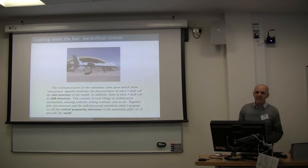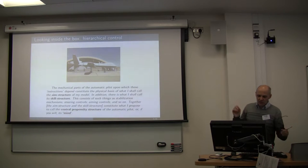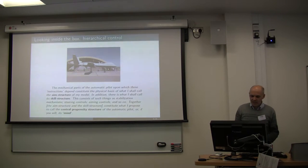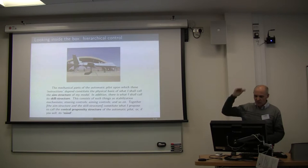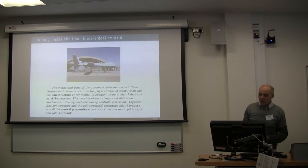If we look inside the box, it almost certainly has what we'd now call a hierarchical control system. The mechanical parts of the automatic pilot — upon which these instructions depend — constitute the physical basis of what Popper calls the aim structure: what the plane is trying to do, what its aims are. In addition, there's what Popper calls the skill structure: stabilization mechanisms, steering controls, aiming controls. That is hierarchy — the aim structure at the top, and the skill structure beneath. Together, they constitute what Popper proposes to call the central propensity structure of the automatic pilot — or, if you will, its mind.